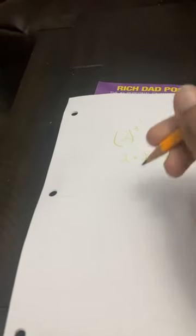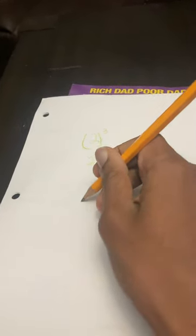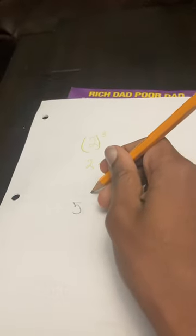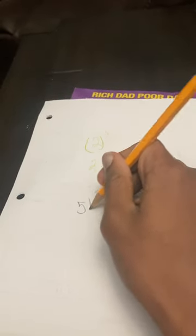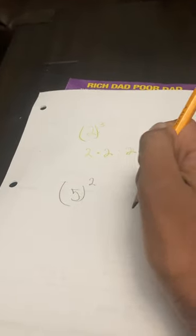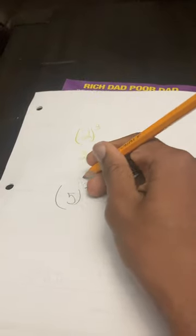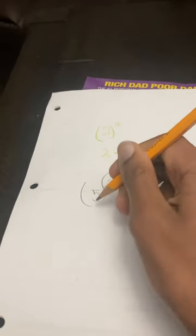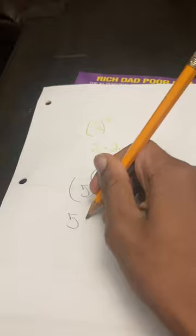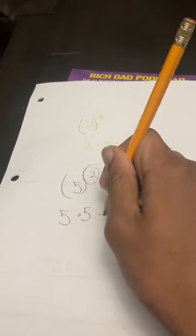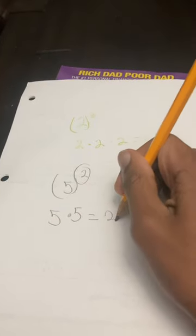For example, if you have five to the second power in parentheses, the two stands for how many times we're doing it. So it's going to be five times five, which equals twenty-five.